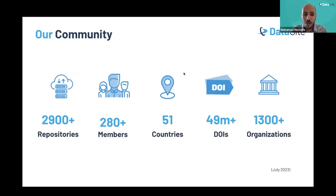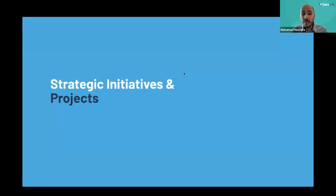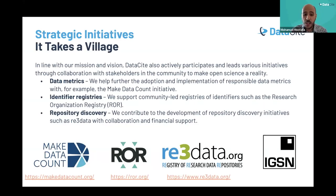We also help build transparent and trusted research infrastructure and encourage collaboration across the research ecosystem. Here is a snapshot of our community at DataCite. We have around 2,900 institutional repositories connecting with us and using our infrastructure to register DOIs for their research outputs and resources. We have 280 members from 51 countries, have registered 49 million DOIs, and work with around 1,300 research organizations around the globe.